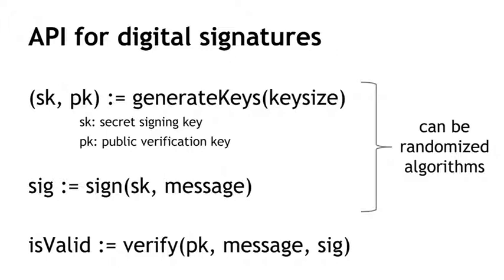The third operation is verify, which takes something that claims to be a valid signature and verifies it's correct. It takes the public key of the signer, the message the signature is supposedly on, and the supposed signature, and returns yes or no — is this a valid signature? These three operations constitute a signature scheme. The first two can be randomized algorithms; verification will always be deterministic. In fact, generateKeys had better be randomized, because it ought to be generating different keys for different people.